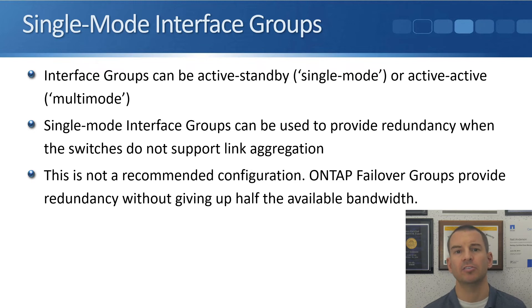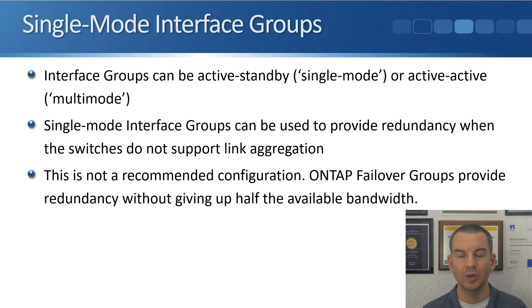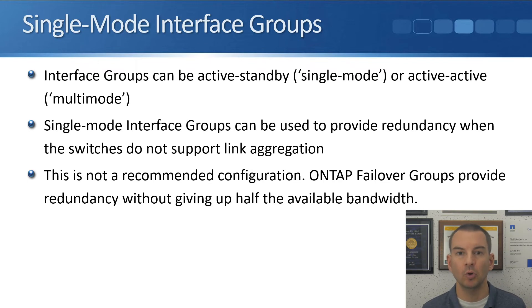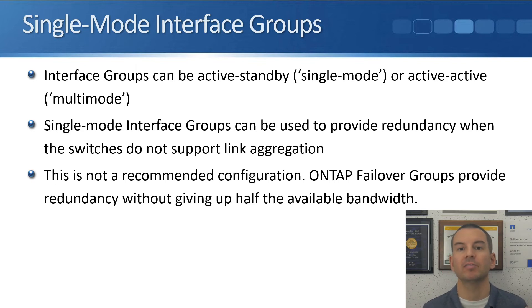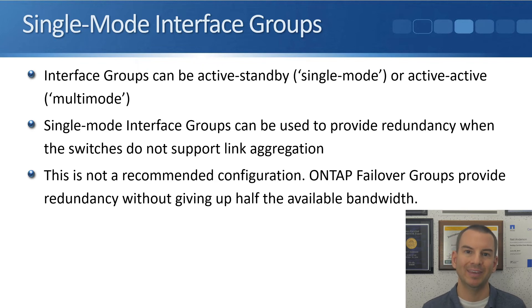For example, if you have two 10 gigabit Ethernet interfaces in an active-standby single mode interface group, that's 20 gigs of total bandwidth but you're only using one interface, so you only get 10 gig. With failover groups, you get the same level of redundancy without cutting bandwidth in half. So single mode interface groups in ONTAP are supported, but never used.